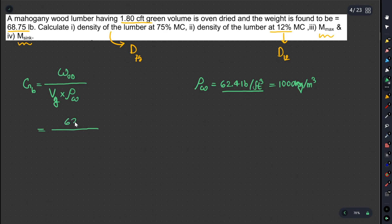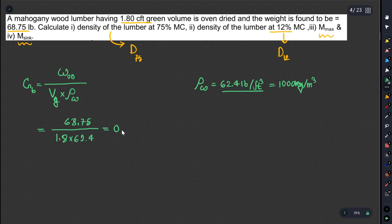OD is 68.75. Volume is 1.8. Water density is 62.4. So what we have to do is calculate specific gravity. Ultimately, Gb equals 68.75 divided by (1.8 × 62.4), which gives 0.612. So 0.612 is the specific gravity result.